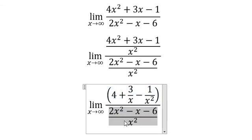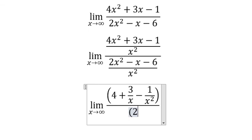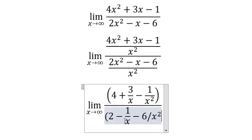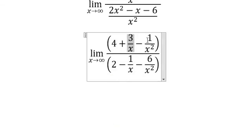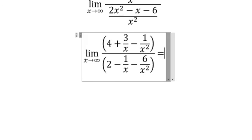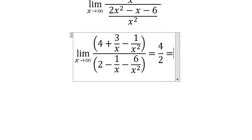For this one we get 2 minus 1 over x minus 6 over x to the power of 2. So these become 0, 0, 0, and 0. We get 4 over 2, which equals 2.